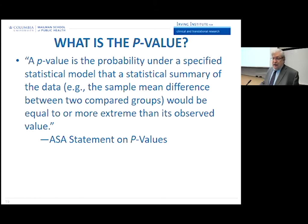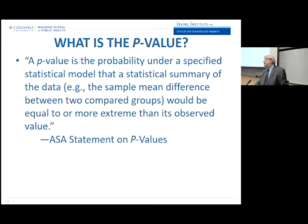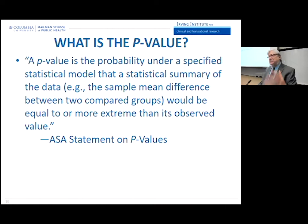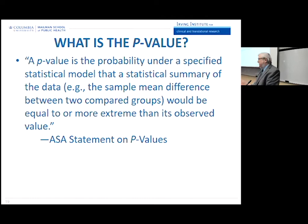Let's review what is the p-value. This is a quote from the ASA statement: 'A p-value is the probability under a specified statistical model that a statistical summary of the data — for example, the sample mean difference between two compared groups — would be equal to or more extreme than its observed value.' I don't know about you, but I have to read that about six times to understand what they're talking about. The definition is couched with certain phrases, caveats, and assumptions — and that's where the difficulty arises.